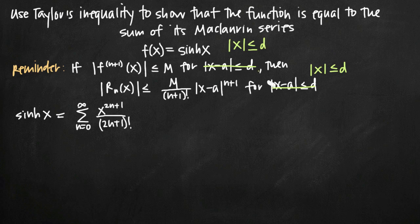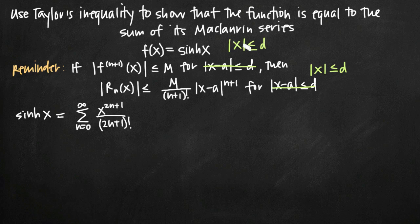Remember that if you're using Taylor's inequality for a Taylor series, you'll have to keep the x minus a because the series could be centered about some non-zero value. But when we're dealing with a Maclaurin series, the value of a is 0, so you can treat |x − a| ≤ d as just |x| ≤ d.